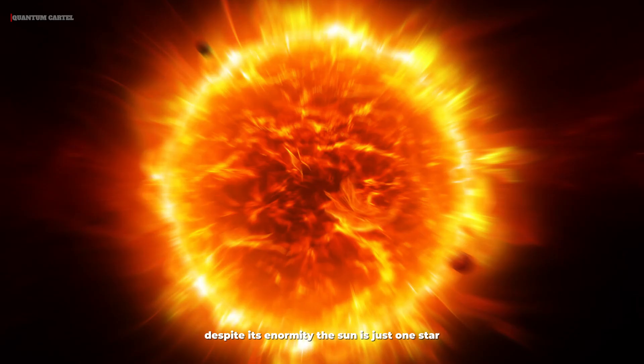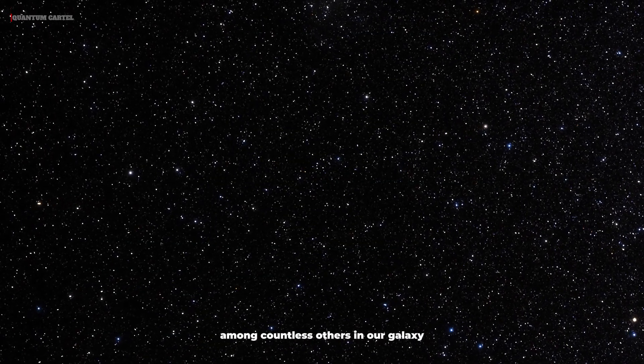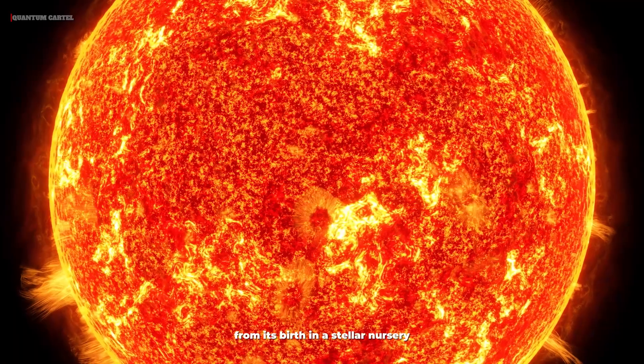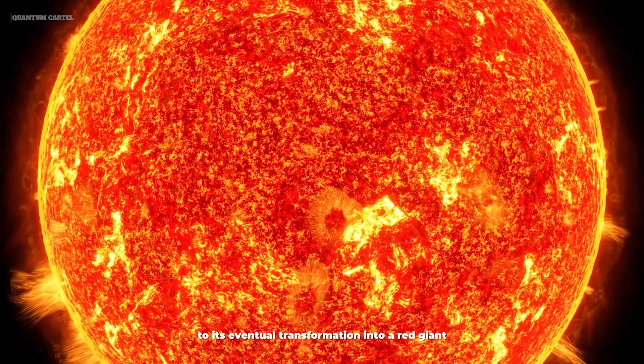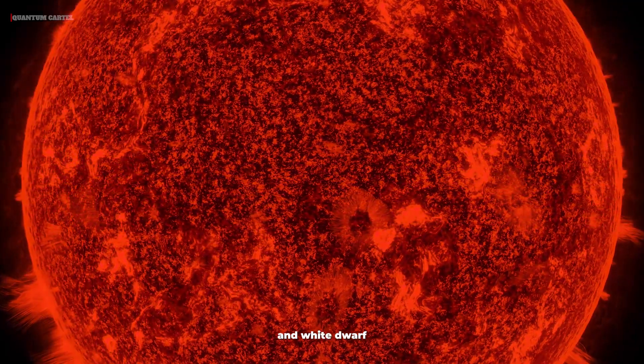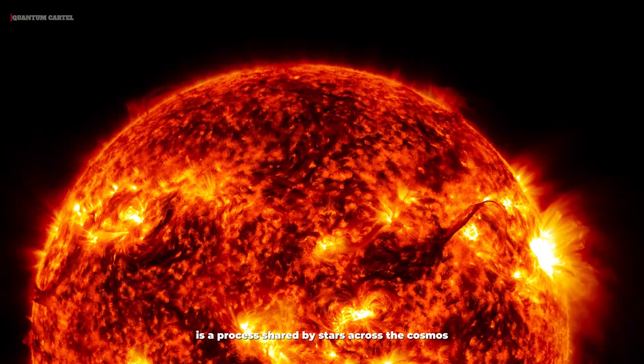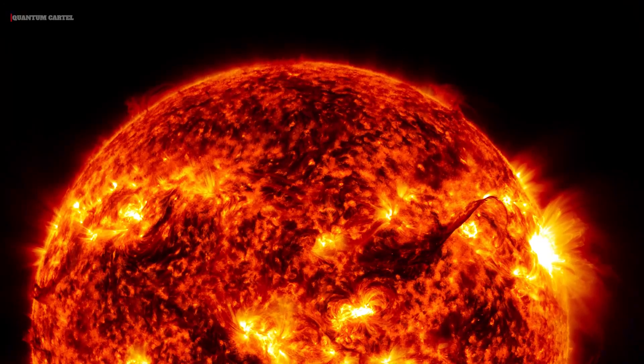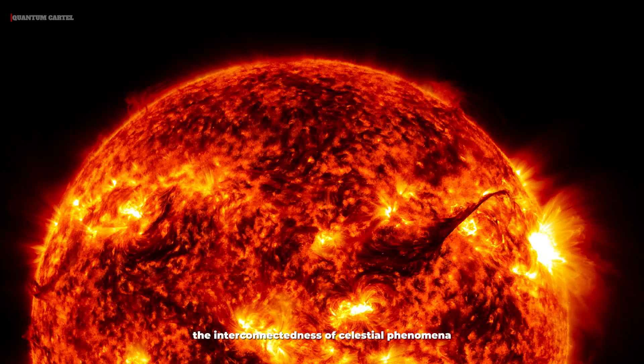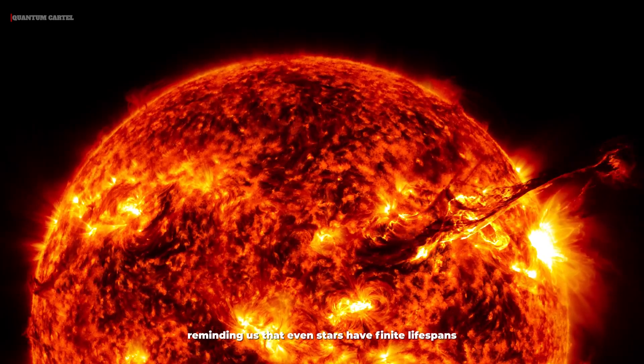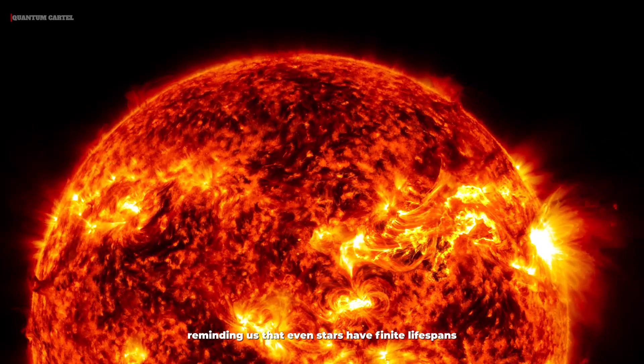Despite its enormity, the Sun is just one star among countless others in our galaxy. From its birth in a stellar nursery to its eventual transformation into a red giant and white dwarf is a process shared by stars across the cosmos. This cycle highlights the interconnectedness of celestial phenomena, reminding us that even stars have finite lifespans.